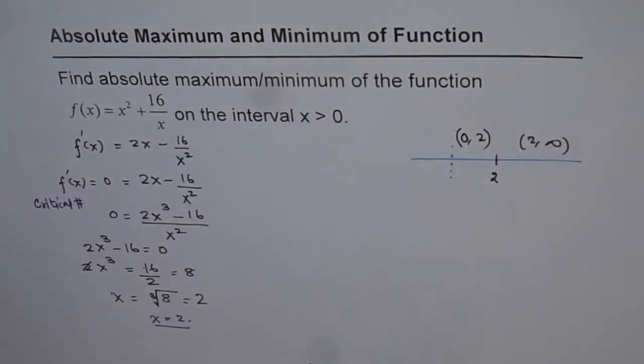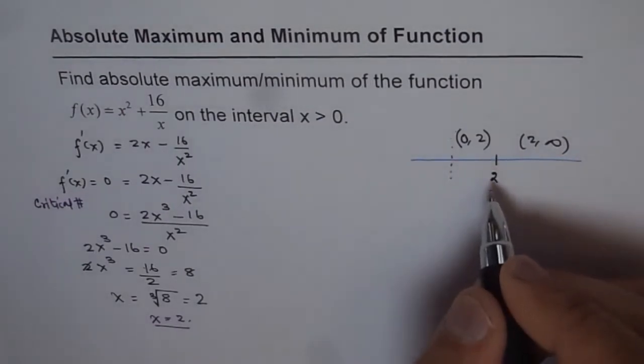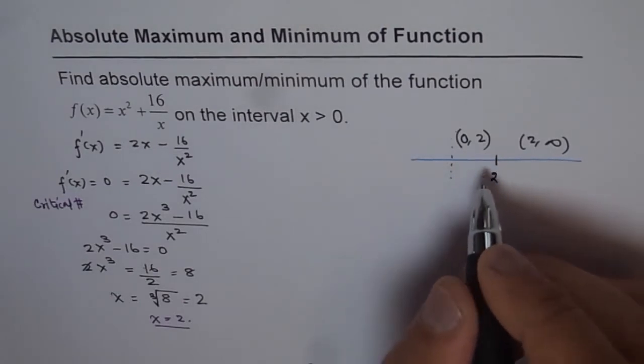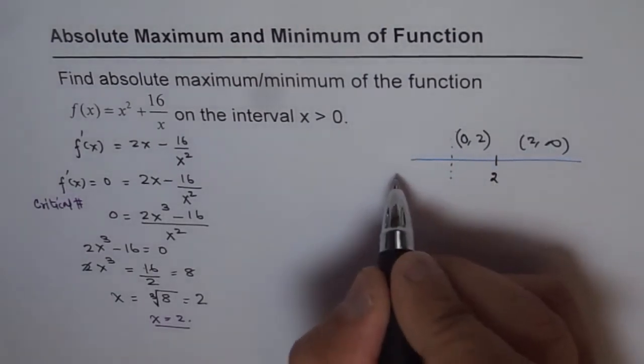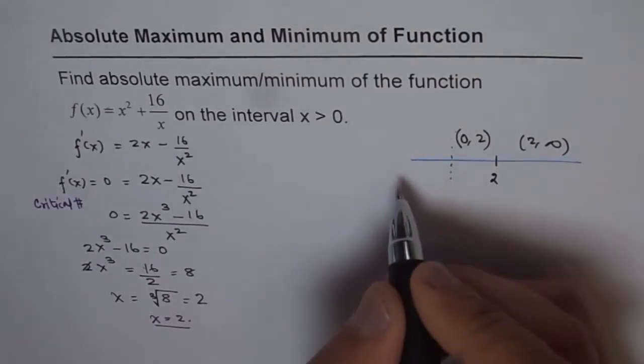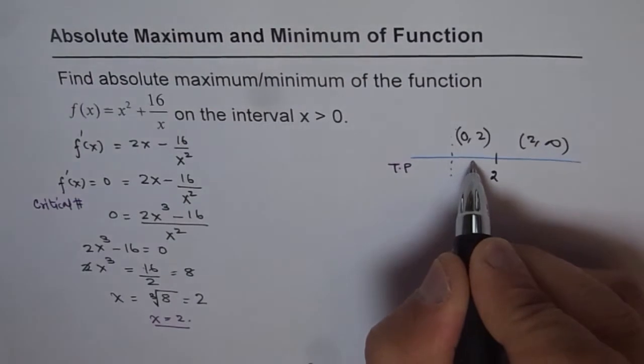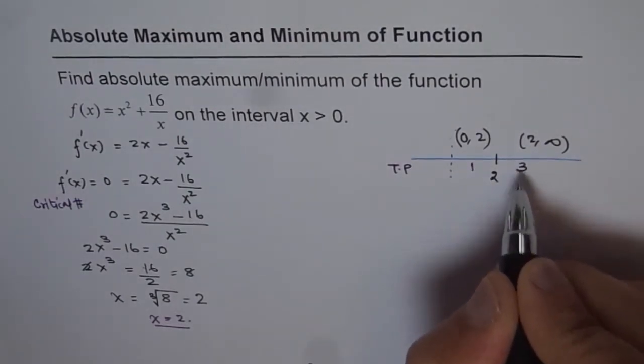At 2, we know the rate of change is 0, so it could be a turning point. In these intervals, let's take some test values. Test points in these intervals could be: I can take a value 1 here and a value 3 here.